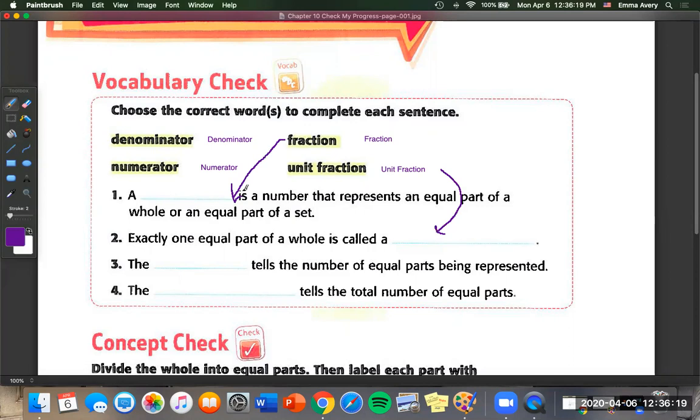Now number three: the blank tells the number of equal parts being represented. Well we know that a denominator tells us the total number, so this one must be the numerator. So I'm just going to put num and you know what I mean. And then that leaves the denominator for number four. I'm just going to put denom. We'll know that's denominator.